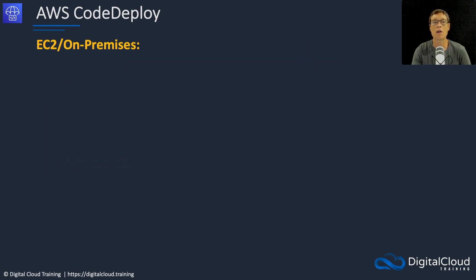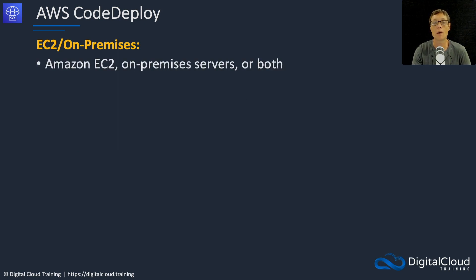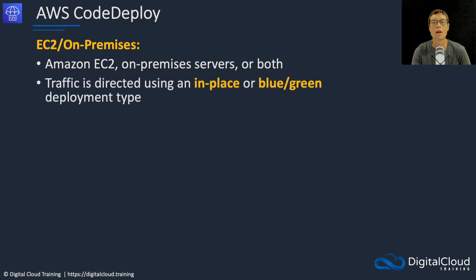For EC2 and on-premises, you're deploying to Amazon EC2 or your servers that are on-premises, or both at the same time. Traffic is directed using an in-place or a blue-green deployment type. For the exam, you need to fully understand the traffic direction options available per deployment type. For EC2 on-premises, you have the options of in-place or blue-green.